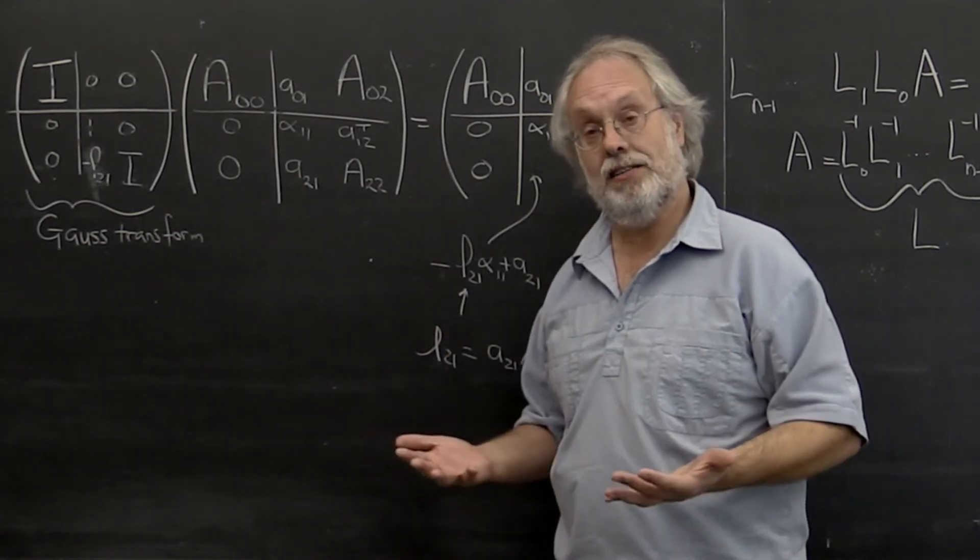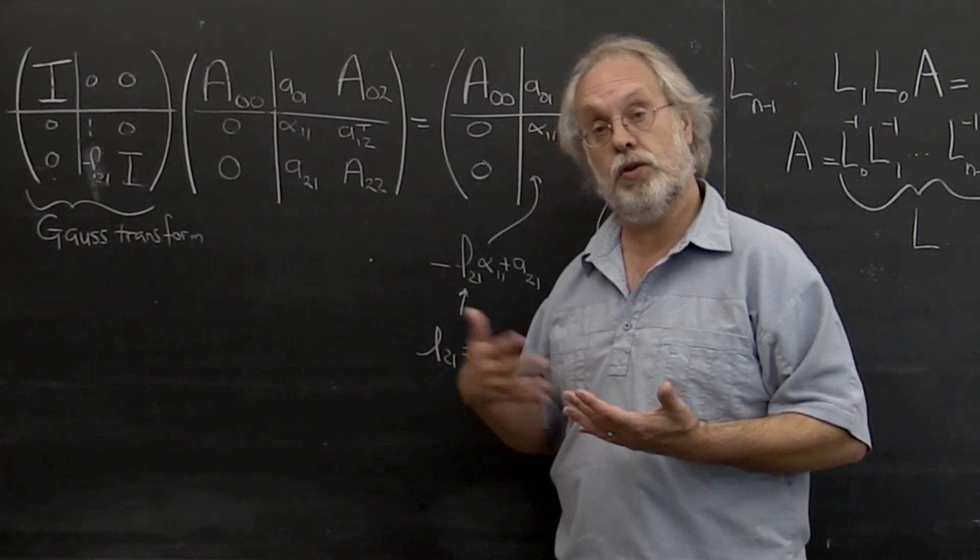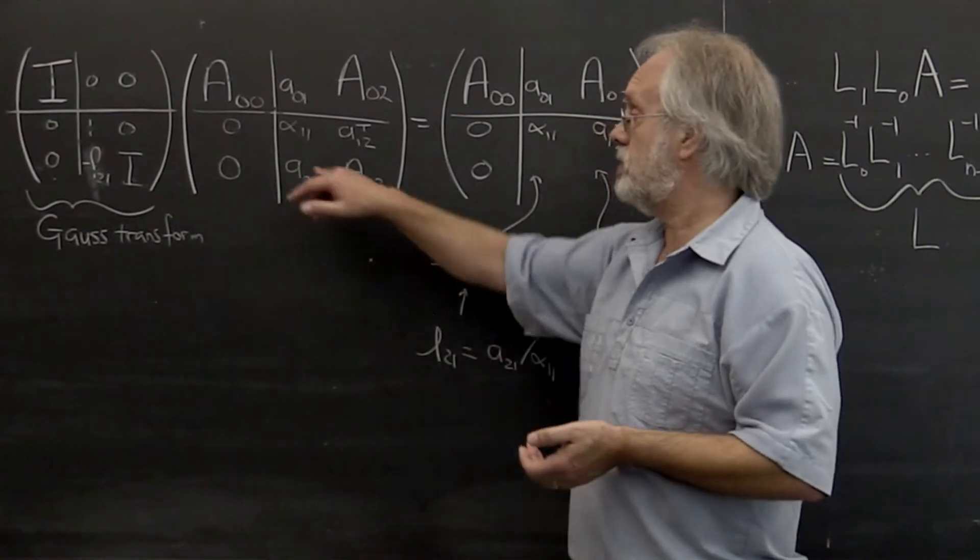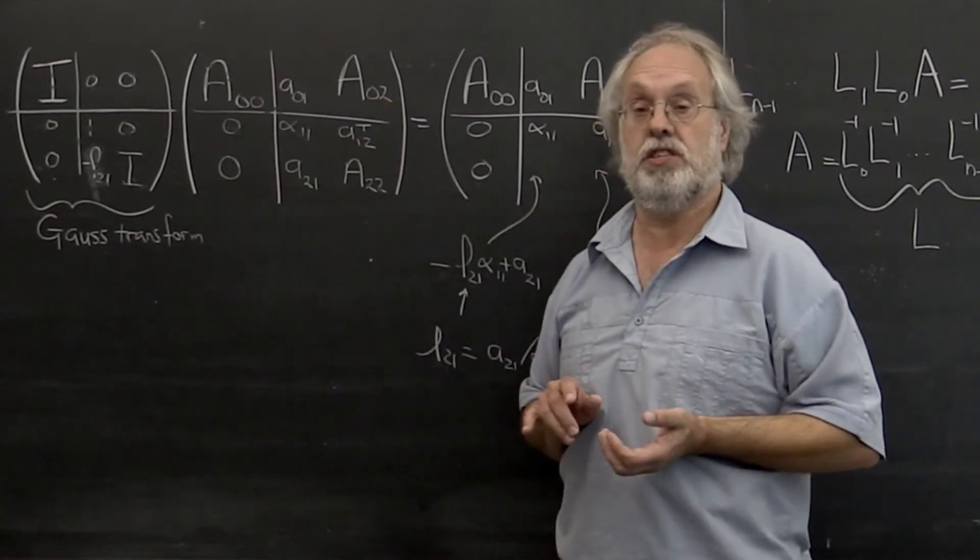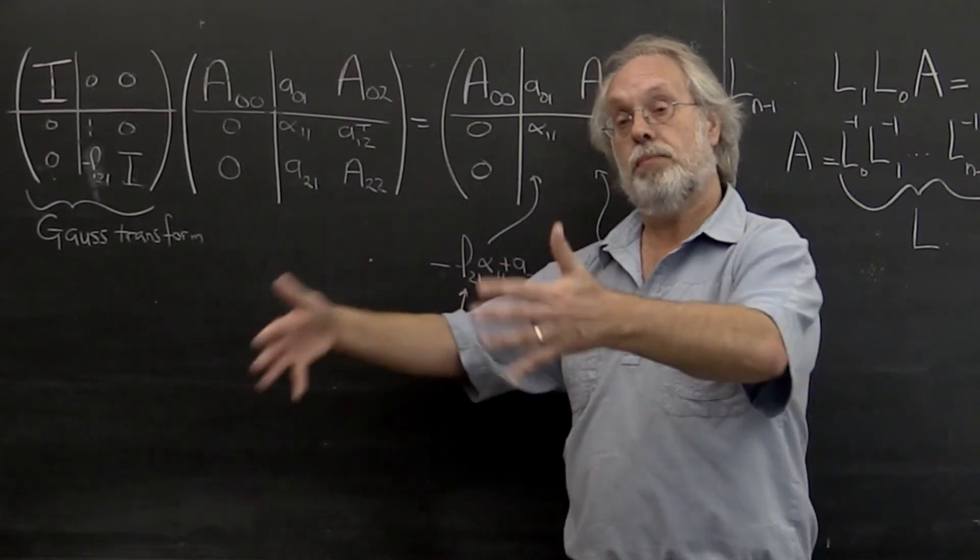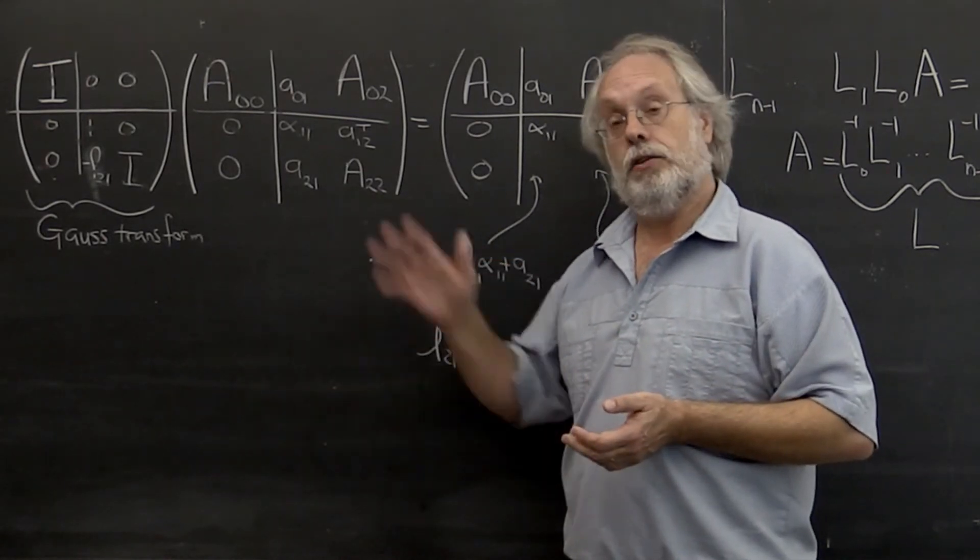Now the problem with that is that you don't have the benefit of foresight and you don't know how to reorder them to keep this from happening. Because remember, this is not the original value that was in matrix A. This is the value as it was updated getting to this point.